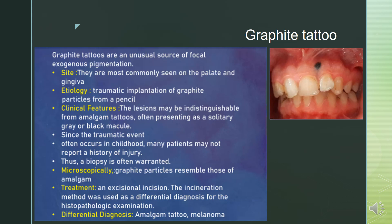Since the traumatic event often occurs in childhood, many patients may not report a history of injury; thus a biopsy is often warranted. Microscopically, graphite particles resemble those of amalgam. Treatment is excisional biopsy. Differential diagnosis includes amalgam tattoo and melanoma.